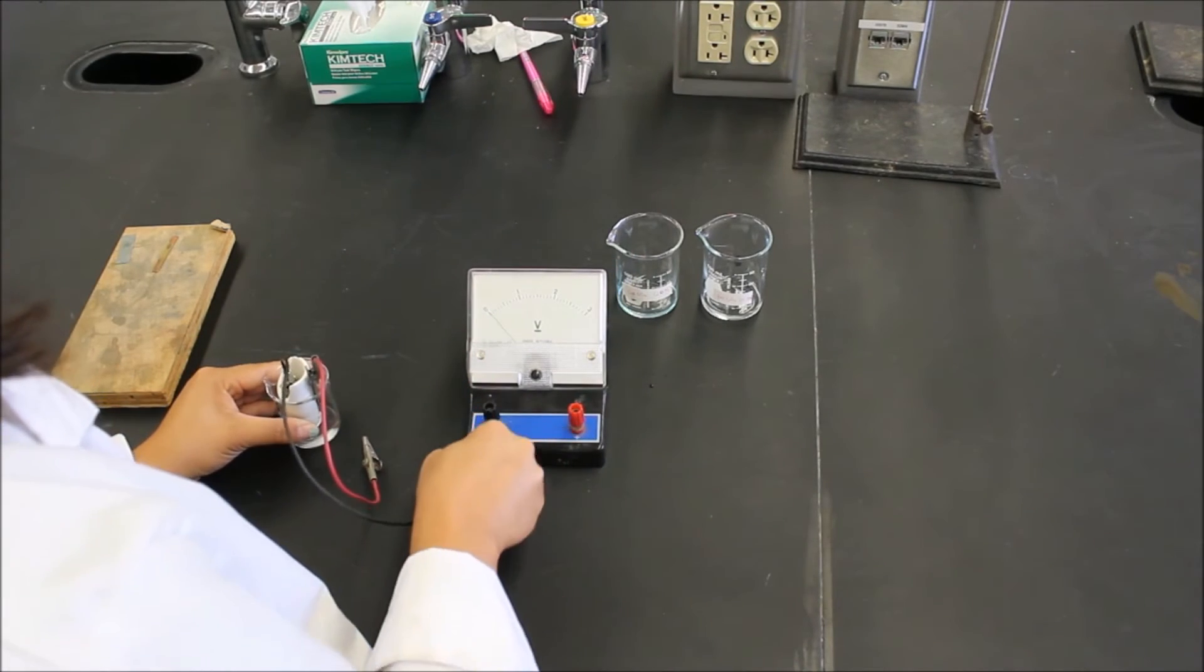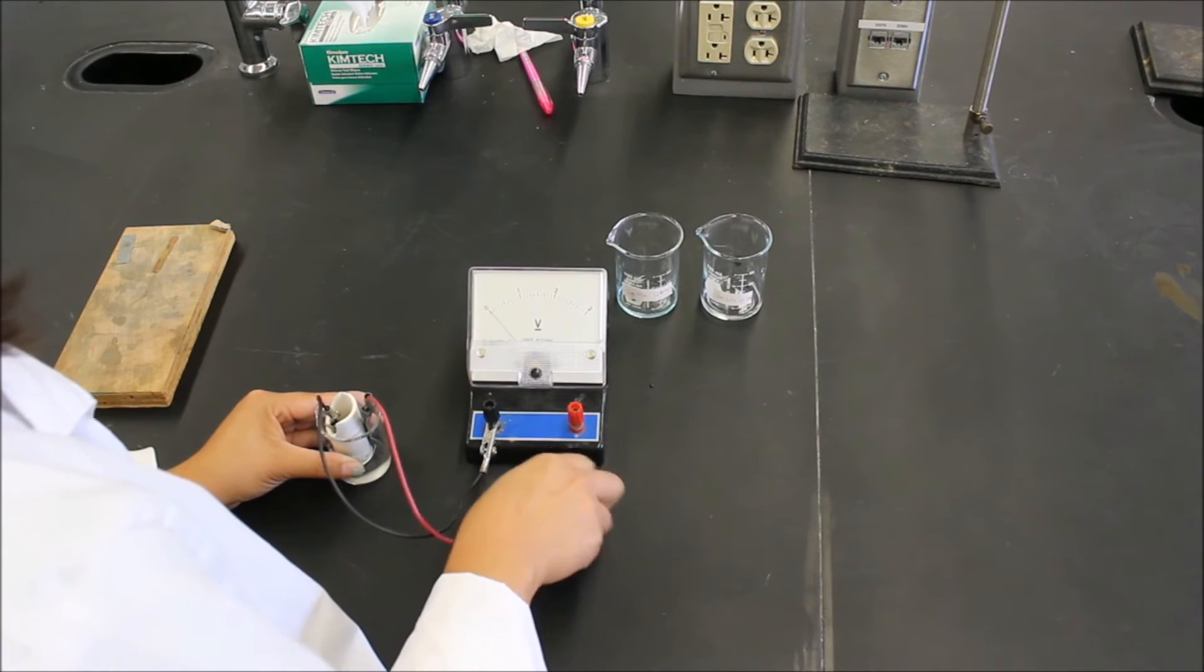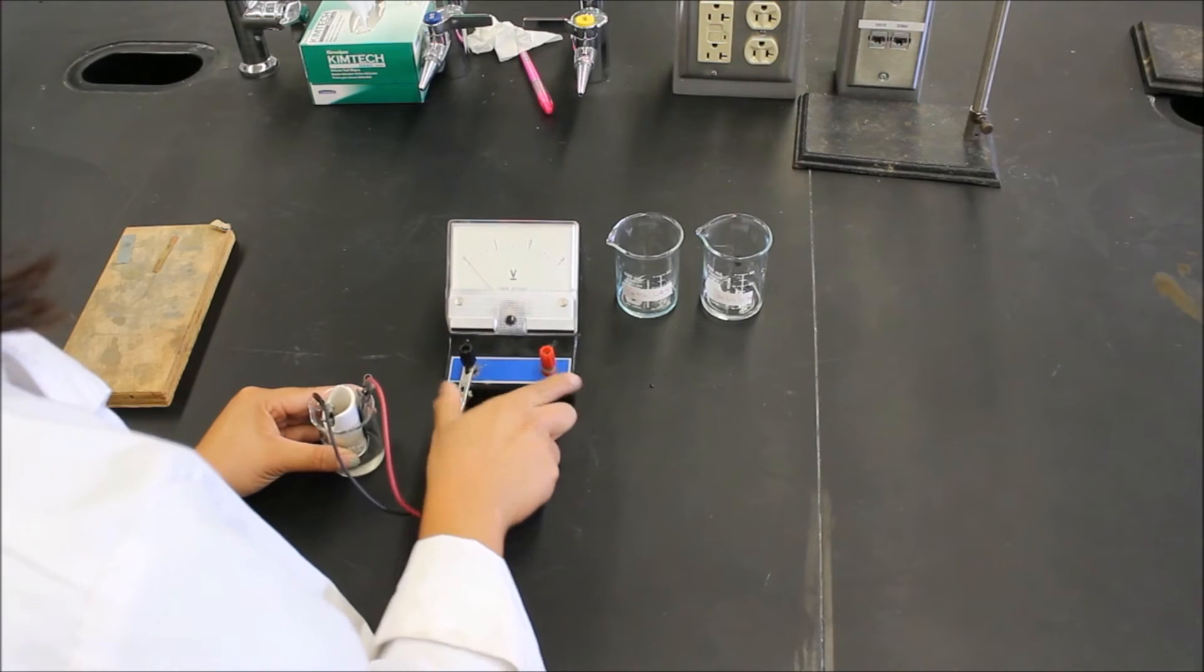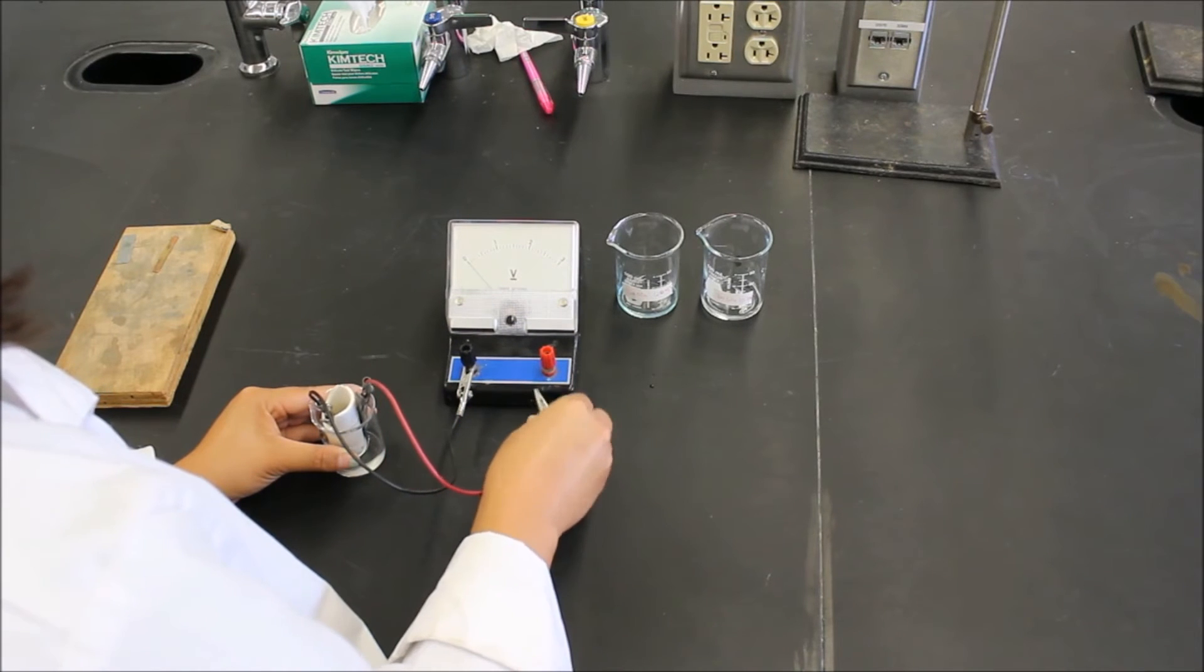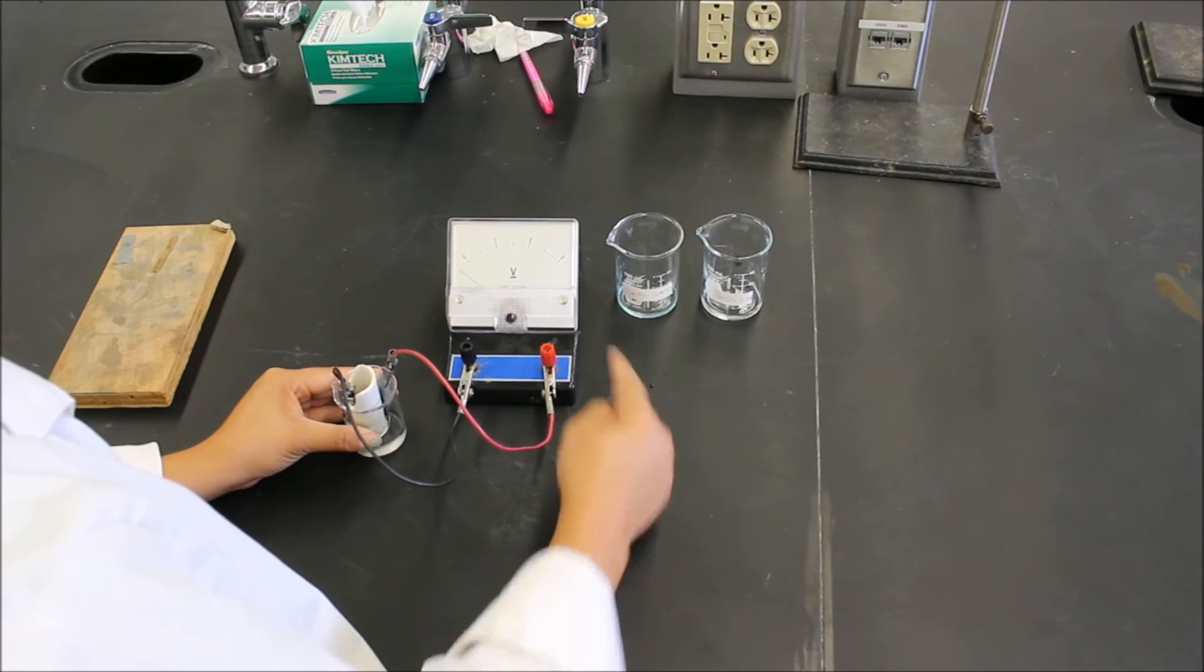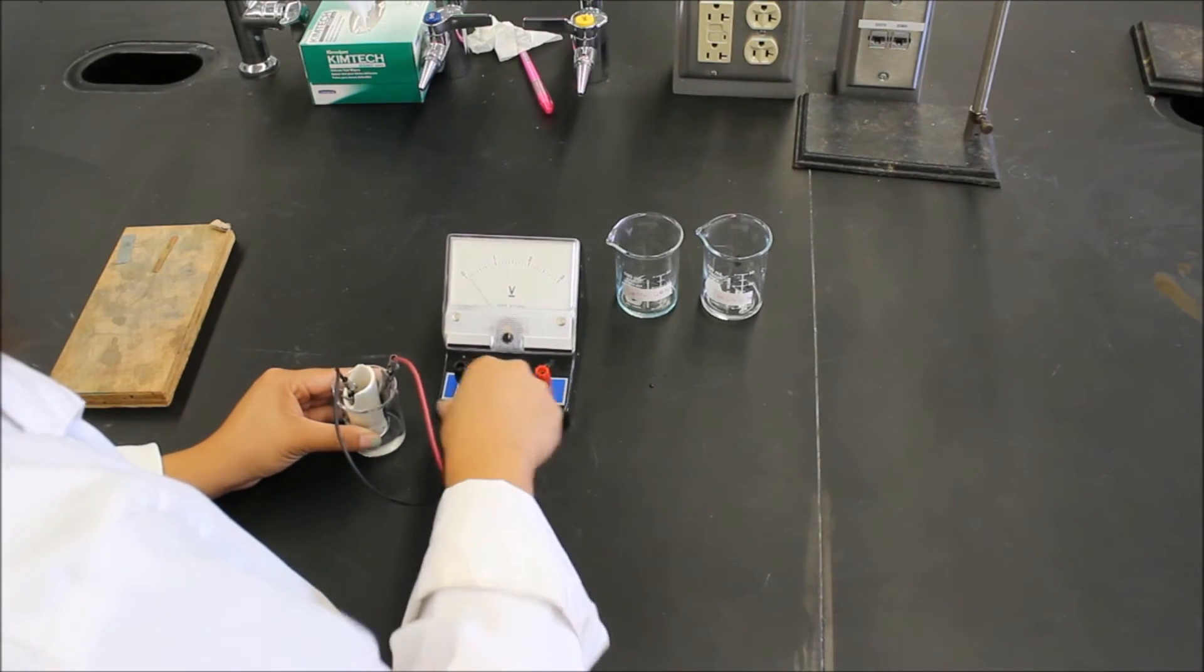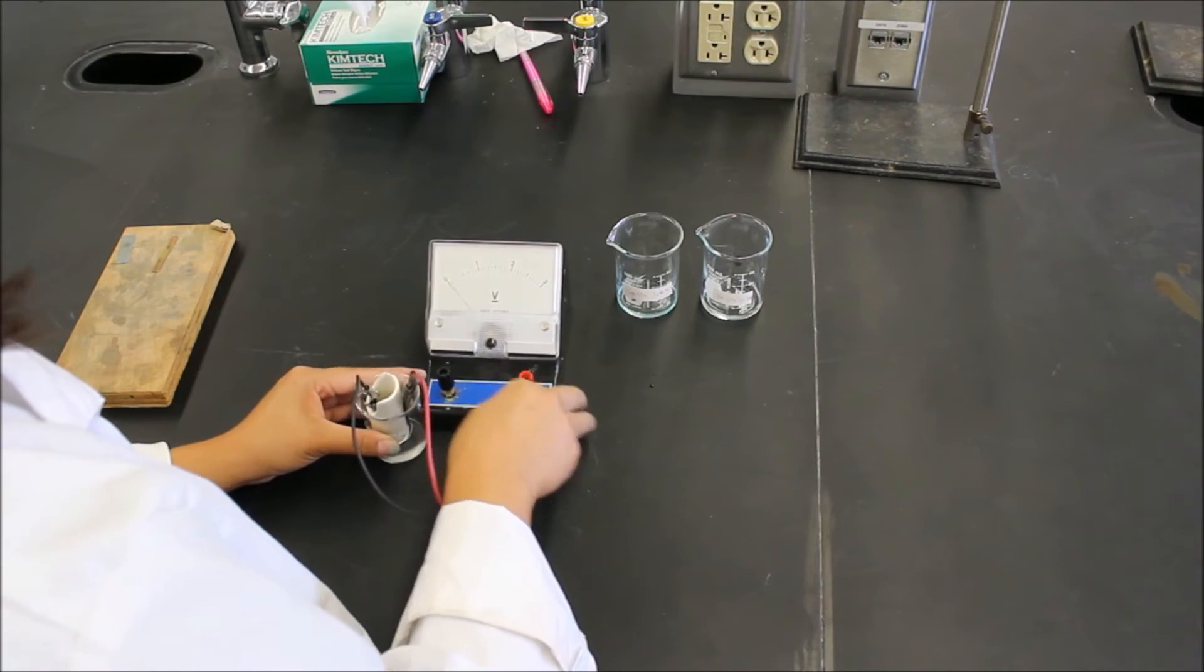Also when you connect these, do note which electrode is connected to which post. You'll see a little positive and negative sign on the bottom of this. Make sure you just write down which one's connected to what. So if you connect them and it's very negative, then you'll want to just switch them up until you get a positive reading on your voltmeter.